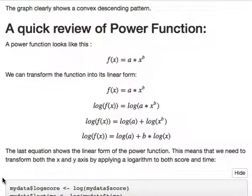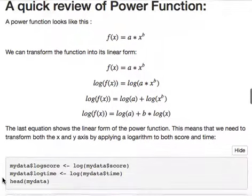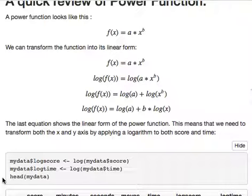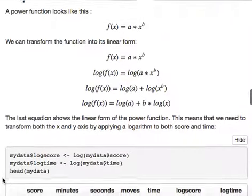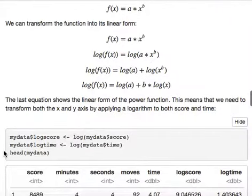As shown in the following lines, a power function can be transformed to a linear function by getting the logarithm on both y and x coordinates. Step 6: Get the logarithm of both score and time and include both variables in the data frame.